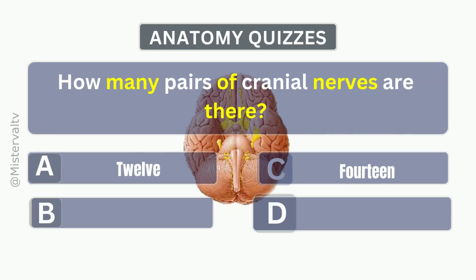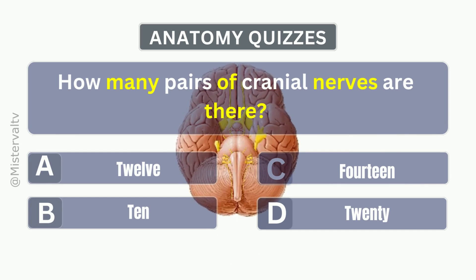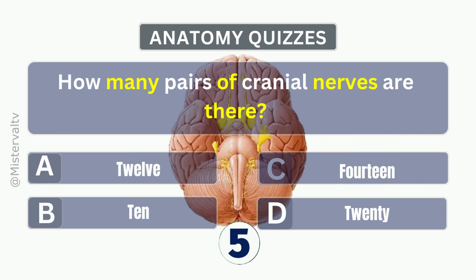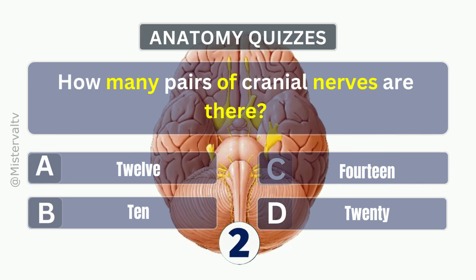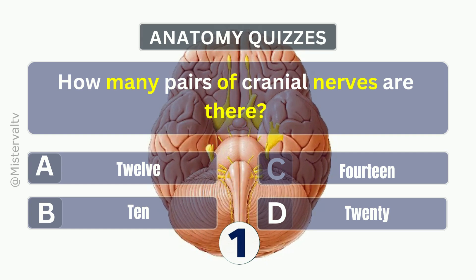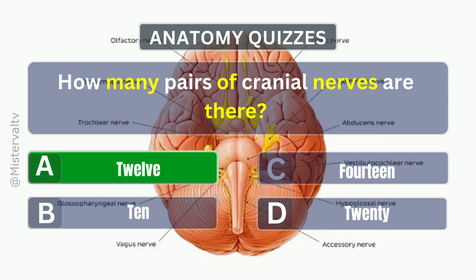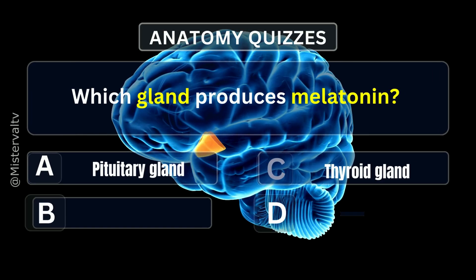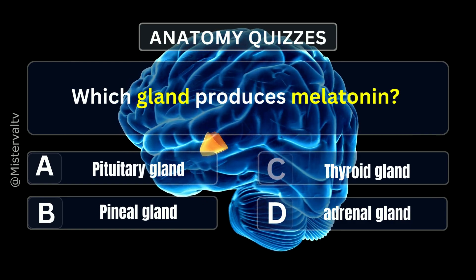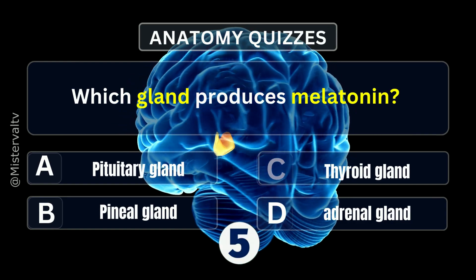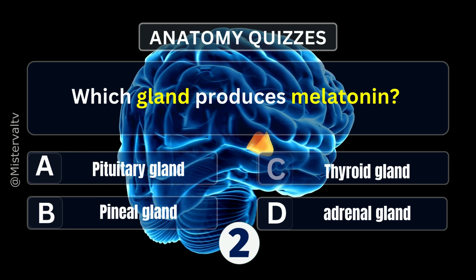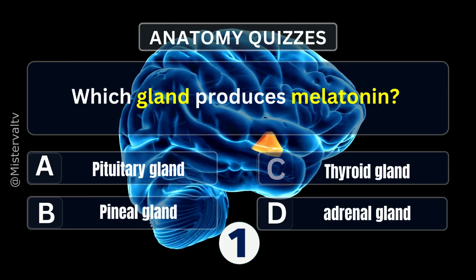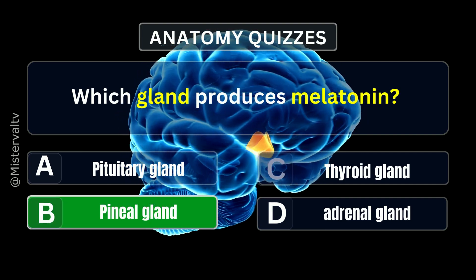How many pairs of cranial nerves are there? Answer. A. 12. Which gland produces melatonin? Answer. B. Pineal gland.